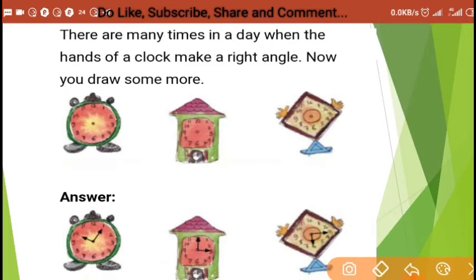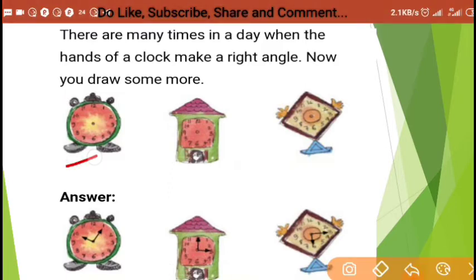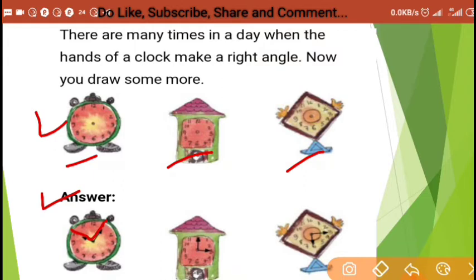In this picture you can see some clocks. You have three clocks and you have to draw the hands to make a right angle. You can make any time. In the answers, for the first clock, I have drawn it like this — this is the right angle. You can make it on your own also.